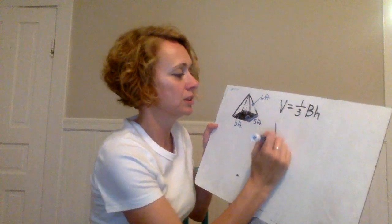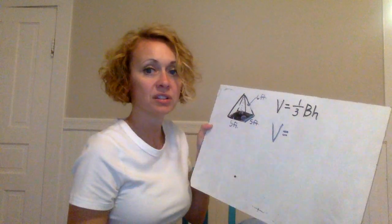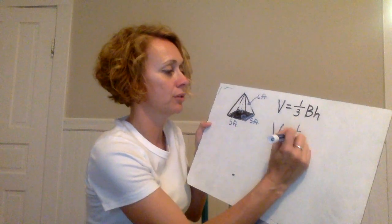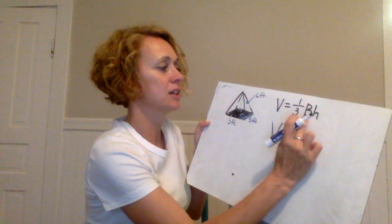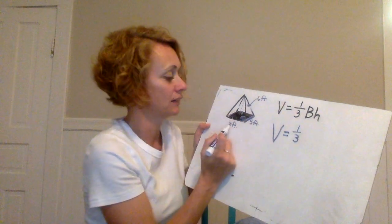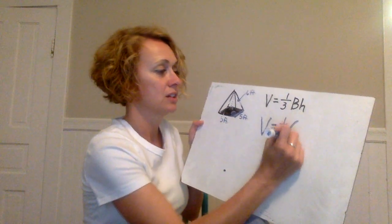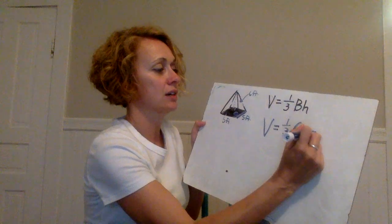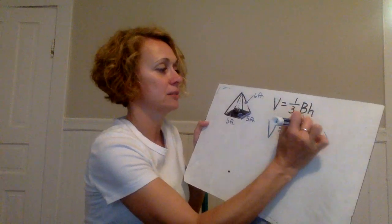What I would do is I would plug those values in to this formula. So I would have one-third. Now the base area would be how do I find the base area of the square? Well I have to multiply five times five. So I'm going to write that out as five times five. That's the base area.